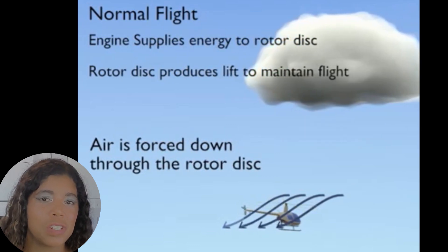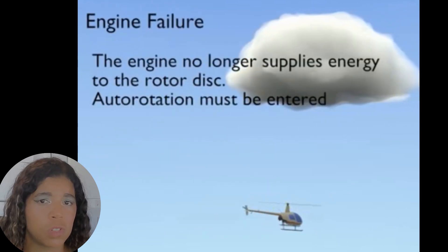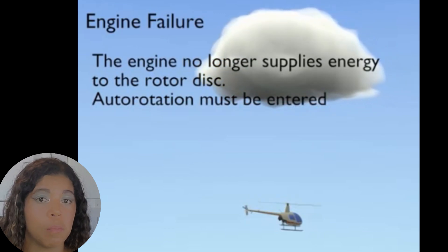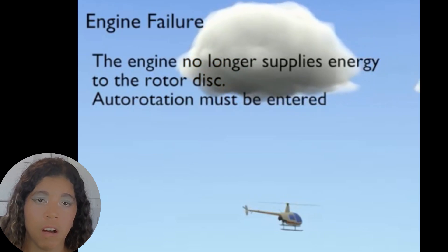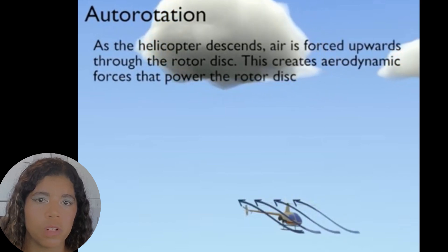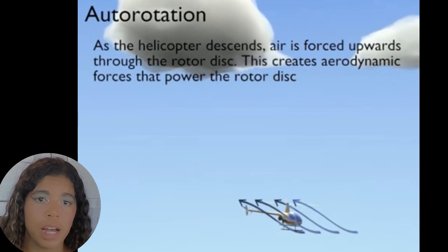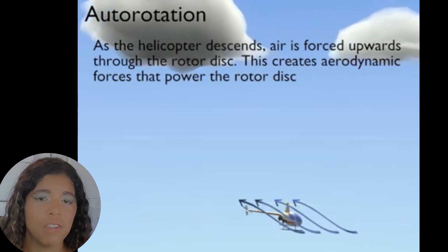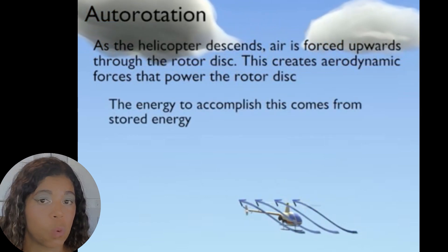In the case of an engine failure, the engine is no longer supplying energy to the rotor disc and an autorotation must be entered. In an autorotation, as the helicopter descends, air is forced upward through the rotor disc. This creates the aerodynamic forces that power the rotor disc and the energy to accomplish this comes from stored energy.